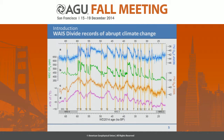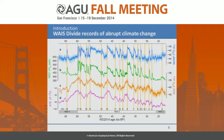These are the new records from WAIS Divide. Up here is the North GRIP δ18O as a proxy for Greenland temperature. This is the new methane record from WAIS Divide — an extremely high-resolution record. Even the minor DO events 17 and 16, which are composed of a bunch of little ones, are really well represented and resolved in this methane record. This is the isotopes from WAIS Divide, and we see the same patterns seen all over Antarctica. This is an East Antarctic stack of five ice cores, and all the events correlate really well — showing these AIM events are a Pan-Antarctic signal.